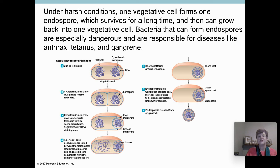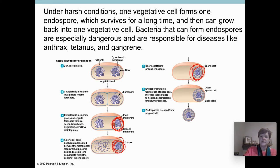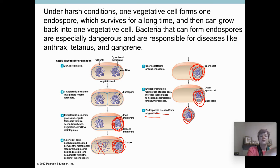In this picture, I don't want you to memorize all the steps, but let's say you have a cell that's starting to divide and it decides to form an endospore. One of the new cells will get a very thick coating on it, and the other cell just doesn't form — but this one is very protected and very hard to kill.